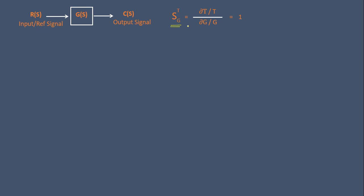For an open loop system whose sensitivity is one, suppose the forward gain element G(s) changes by 10 percent due to some external parameters like temperature. That is, ∂G/G — the change in forward gain — is 10 percent. With the sensitivity S_T^G of an open loop system equal to one, let us find how much the transfer function will change.